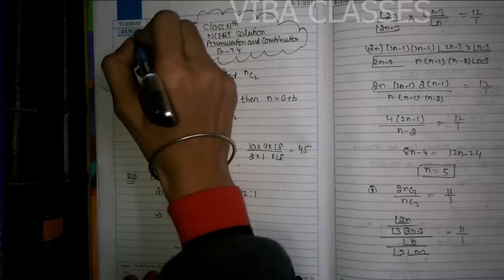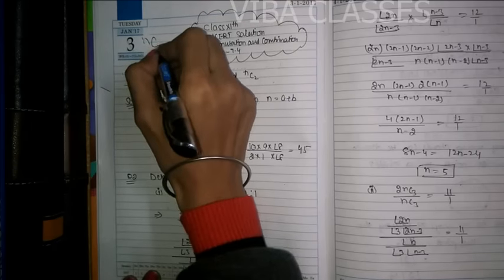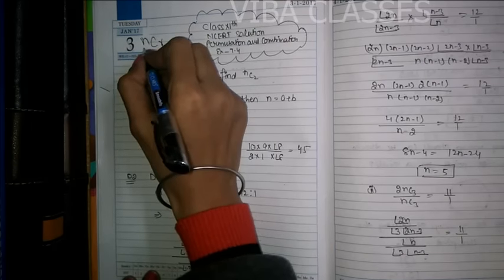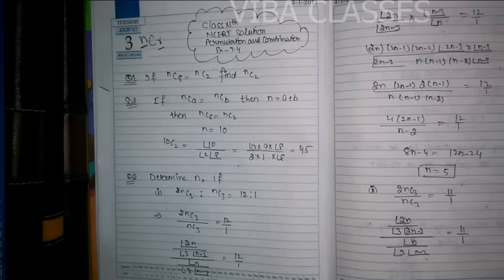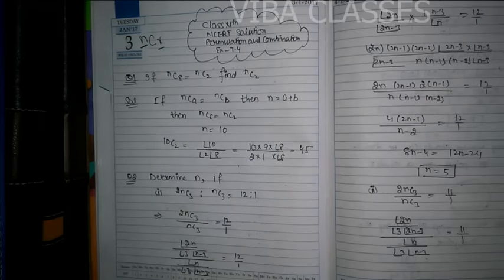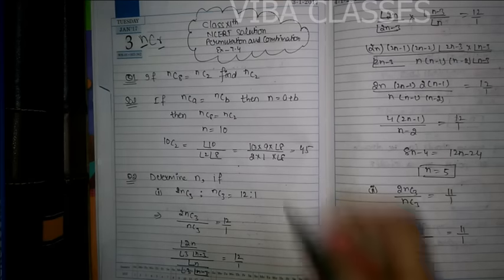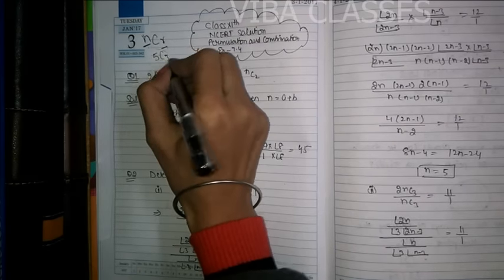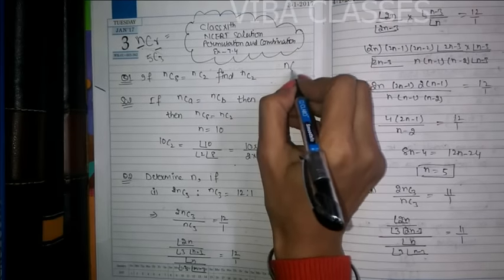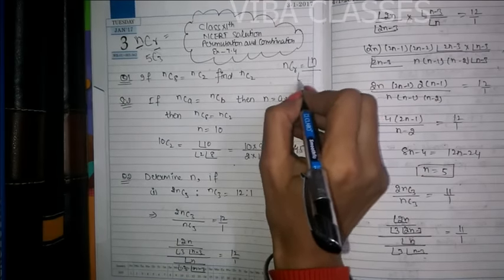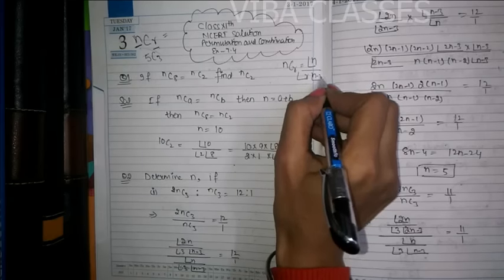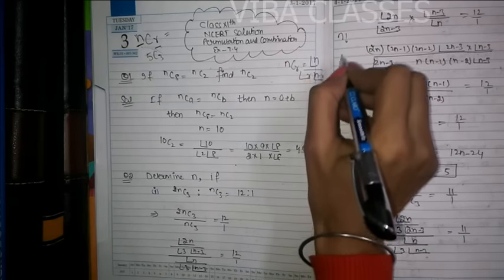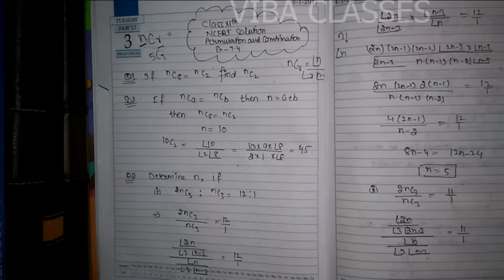Let's look at the combination formula. The combination formula is NCR. N means the total available things, and R is what you have to select. For example, if you have 5 balls and you have to select 3, you write 5C3. The formula for NCR is: factorial n divided by factorial r into factorial (n minus r). You can follow this notation.